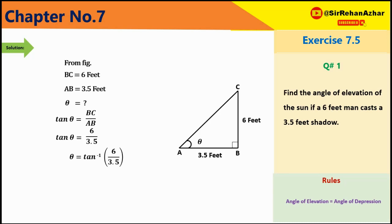6/3.5 को simplify करेंगे तो 1.7143 हासल होगा। Tangent inverse की value find करते हैं 1.7143 पर तो theta = 57.94 degrees। यही angle of elevation है सूरज का।